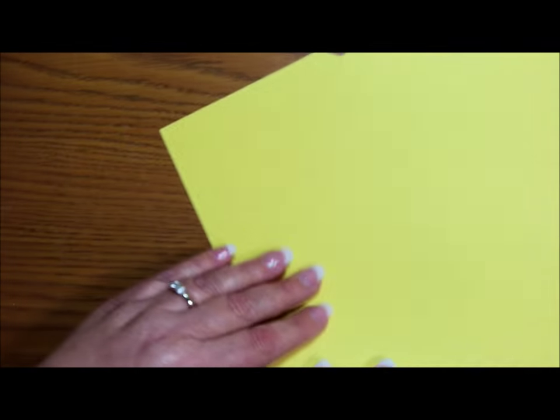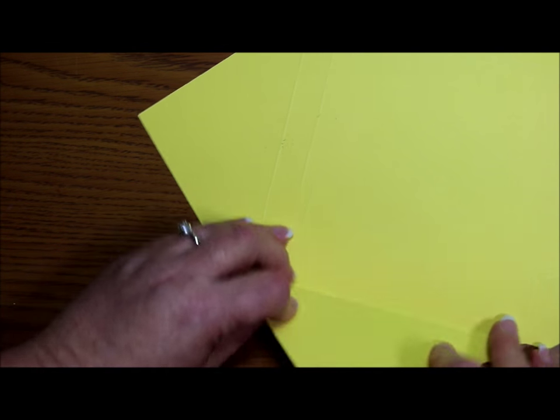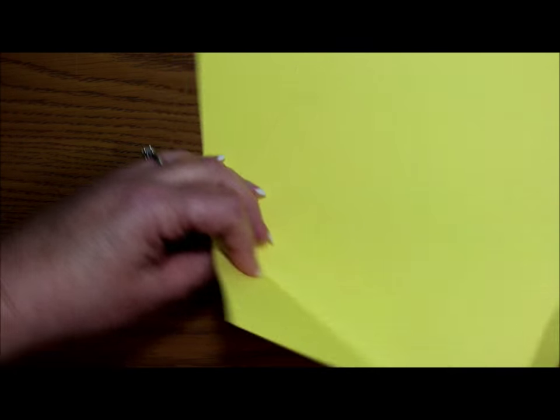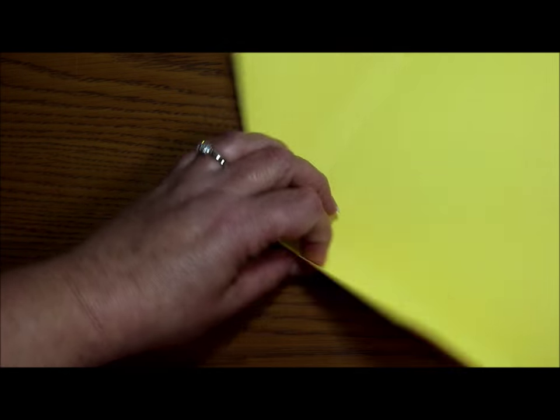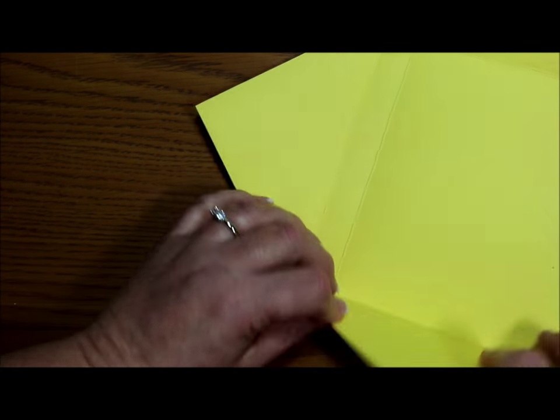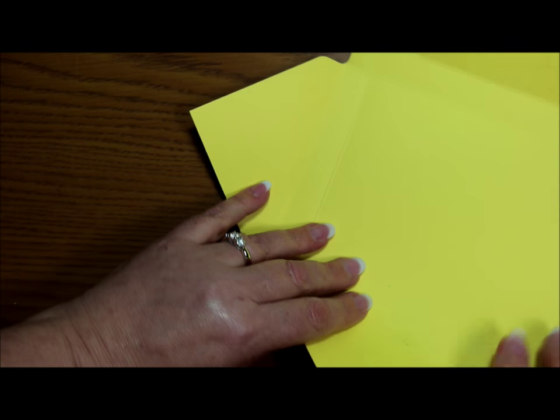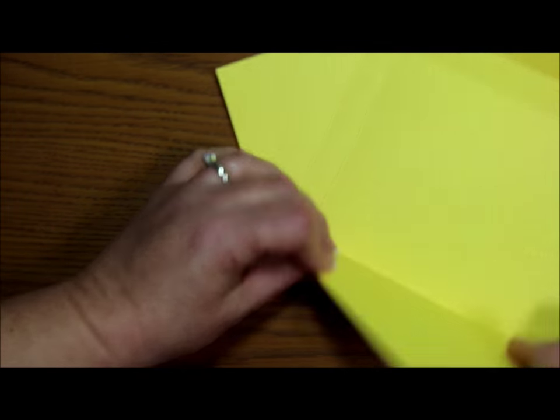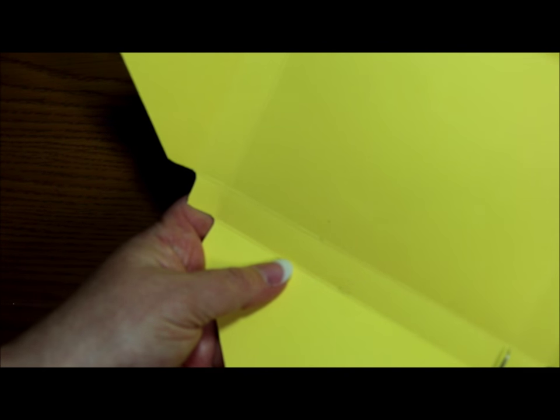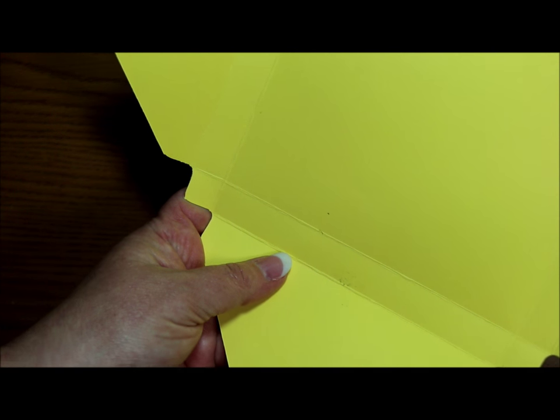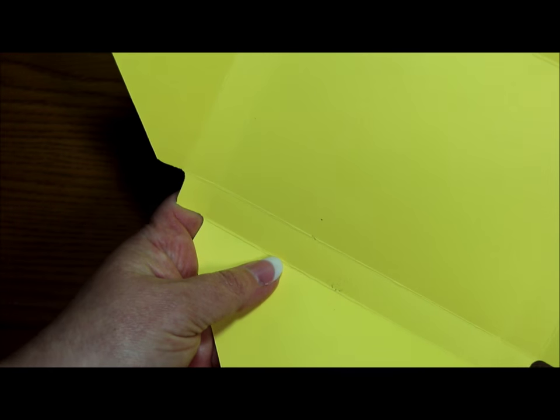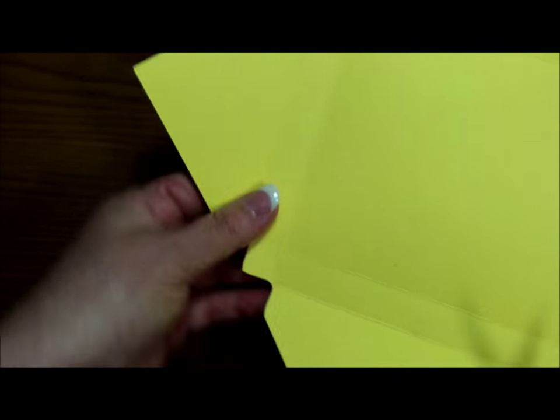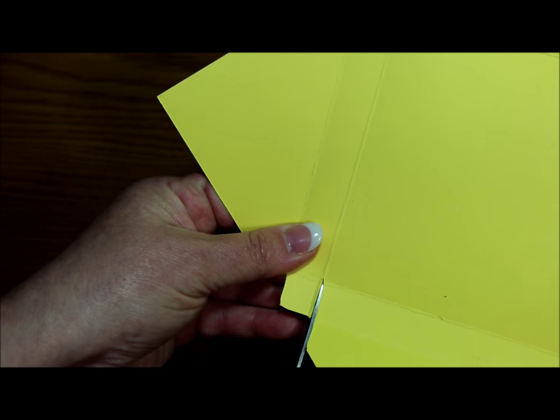And I'm going to turn this over and I'm going to fold along all of my score lines and burnish well. And this would be a time when you would want to use your bone folder. Now you're going to want to find your score lines at the corner and you're going to want to cut up from the edge to the first intersecting score line where you have that little square on the corner. You're going to want to do that on two of your corners.